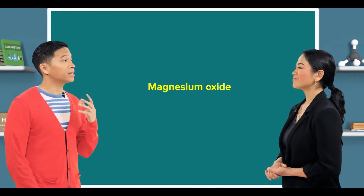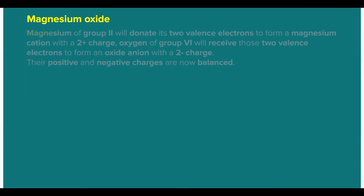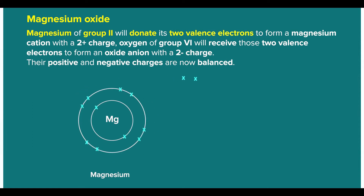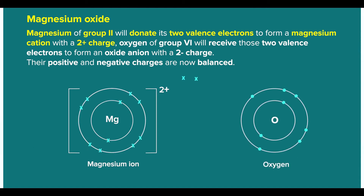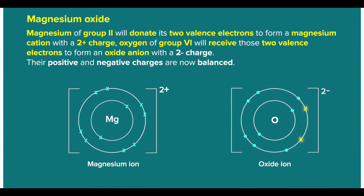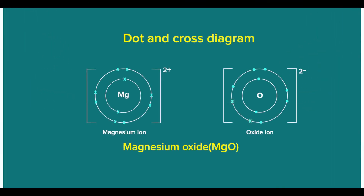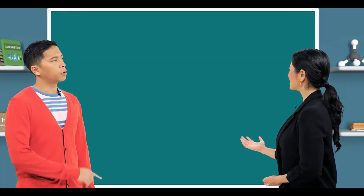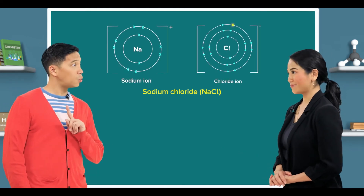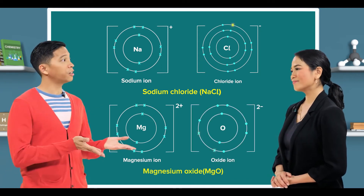Try giving me another example of an ionic bond. Let's take magnesium oxide as an example. Magnesium of group 2 donates its two valence electrons to form a magnesium cation with a plus 2 charge, while oxygen of group 6 receives those two valence electrons to form an oxide anion with a minus 2 charge. Their positive and negative charges are now balanced. Let's take a look at the dot and cross diagram of magnesium oxide. Plus 1 with minus 1, plus 2 with minus 2 — these ions are balanced already.